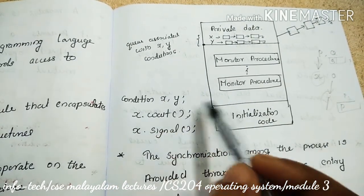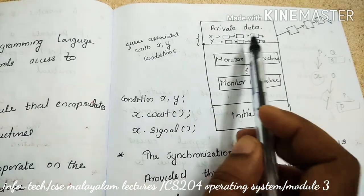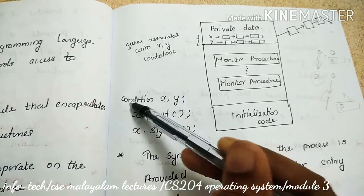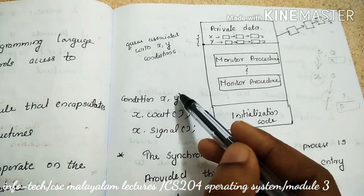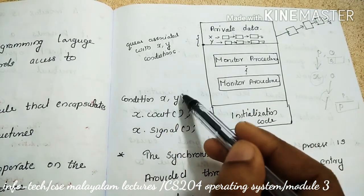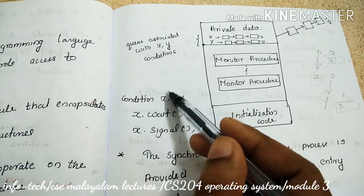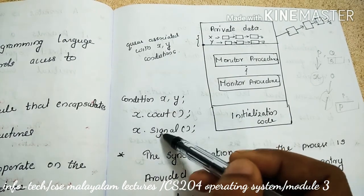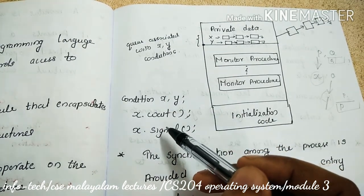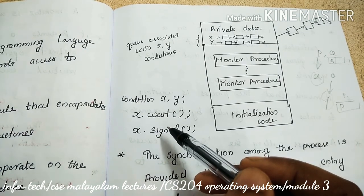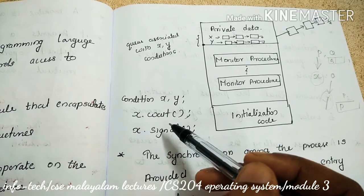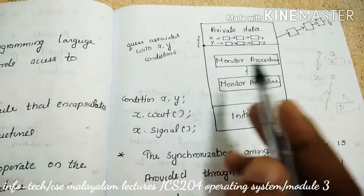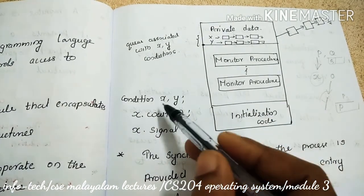Condition variables, so we can use the monitors. This is the syntax: condition x, y. Now condition variables declare the condition variables and allow two operations, signal and wait. We can use the same for signal and wait.